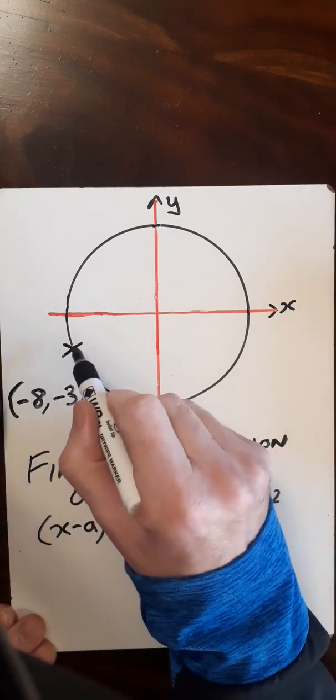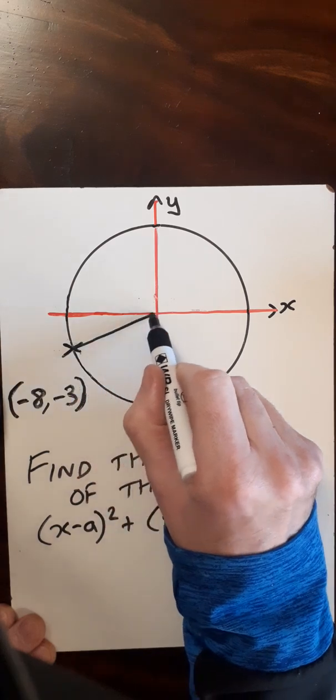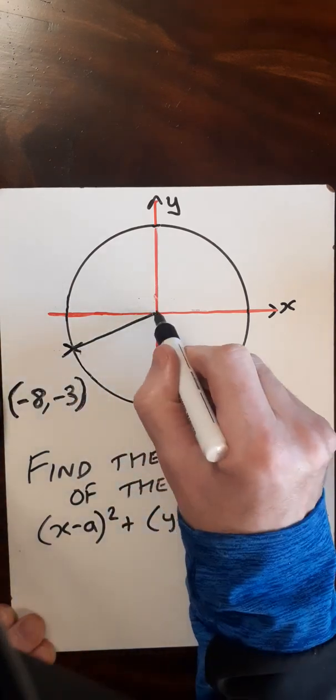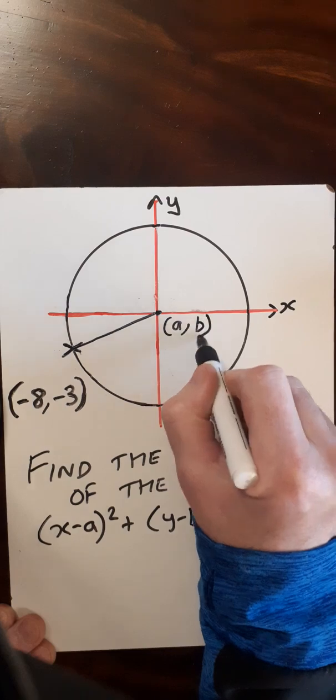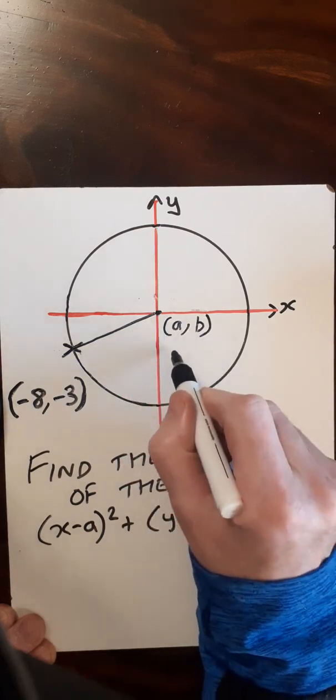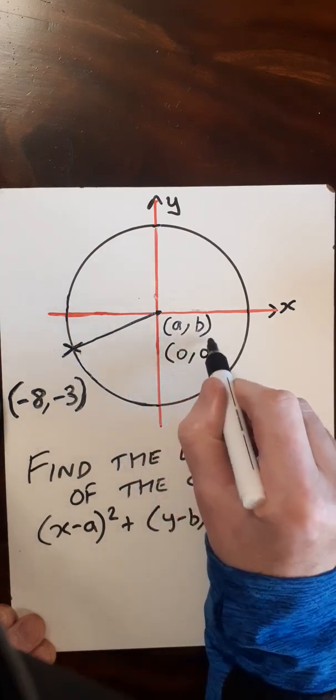So for the radius of the circle, I could just draw a straight line from here to the centre. And at this centre, that will be my coordinates of a and b. Here I can see it's the origin. So those are both 0, 0.